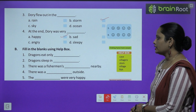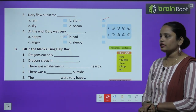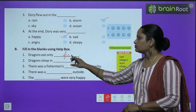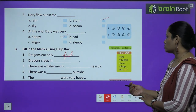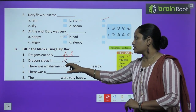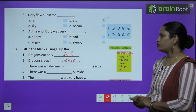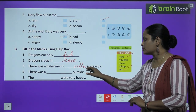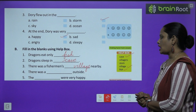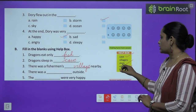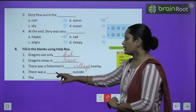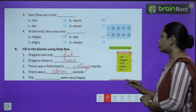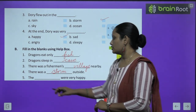Now let's move on to Part B — fill in the blanks using the help box. Dragons eat only fish, so we write 'fish.' Dragons sleep in a cave, so we write 'cave.' There was a fisherman's village nearby, so we write 'village.' There was a storm outside, so we write 'storm.' The villagers were very happy, so we write 'villagers.'